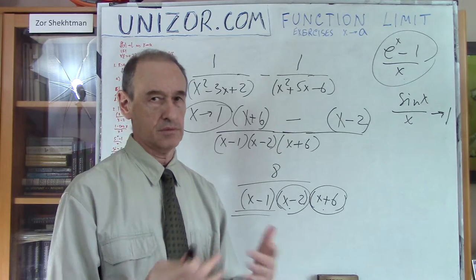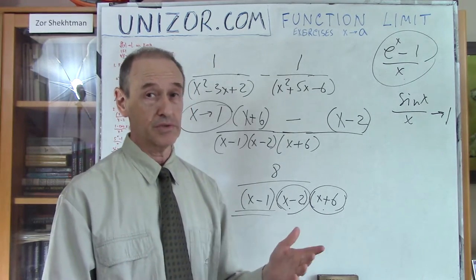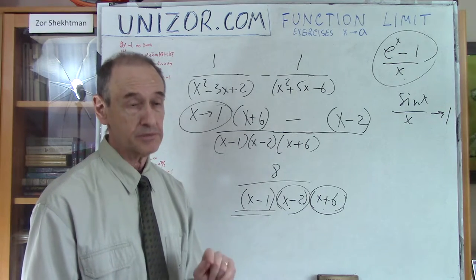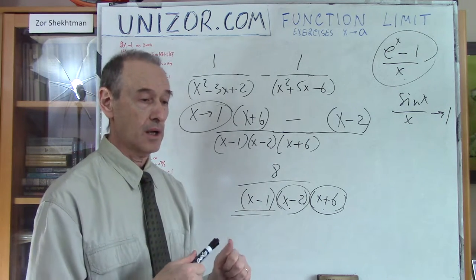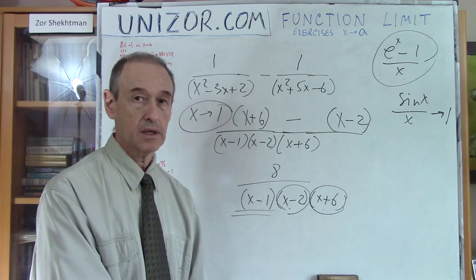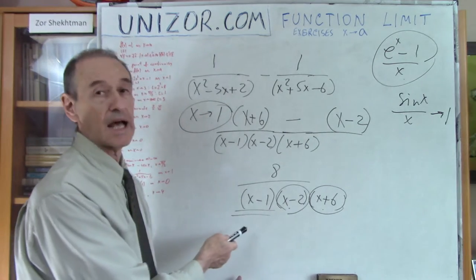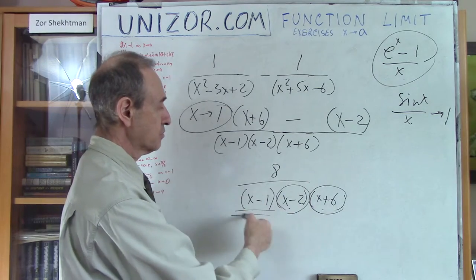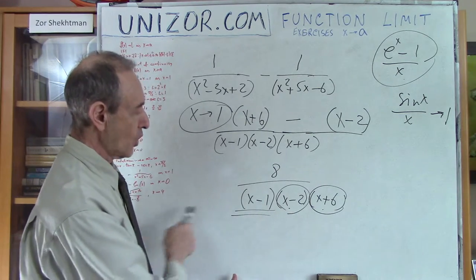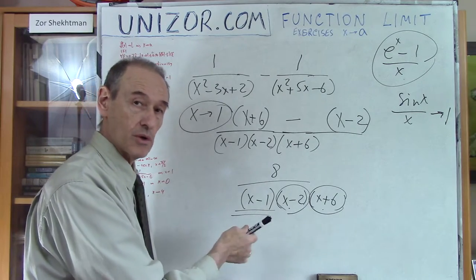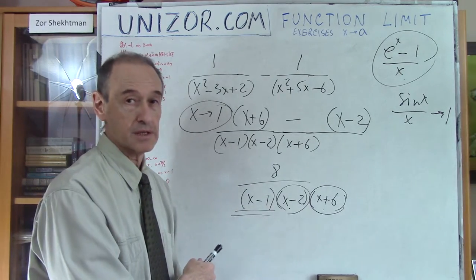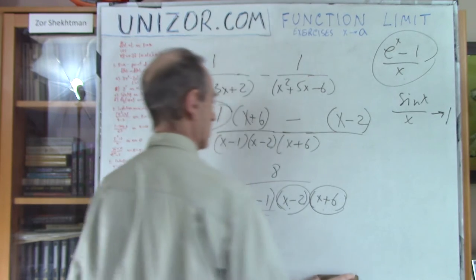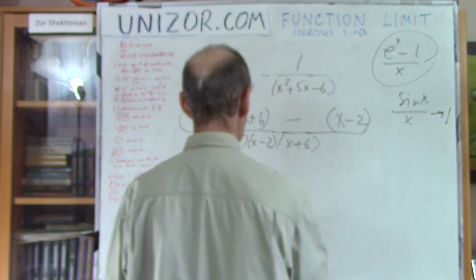As x goes to 1, the factors (x−2) and (x+6) approach −1 and 7, which are constants, but (x−1) goes to 0 — so the whole expression grows without bound. Since the sign of the result depends on whether x approaches 1 from the right or left, the limit does not exist. If x goes to 1 from the right (x → 1⁺) or from the left (x → 1⁻), the infinity is positive or negative respectively. Without specifying direction, the function has no limit.